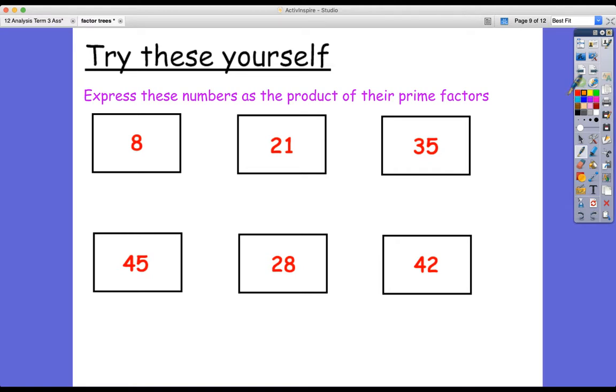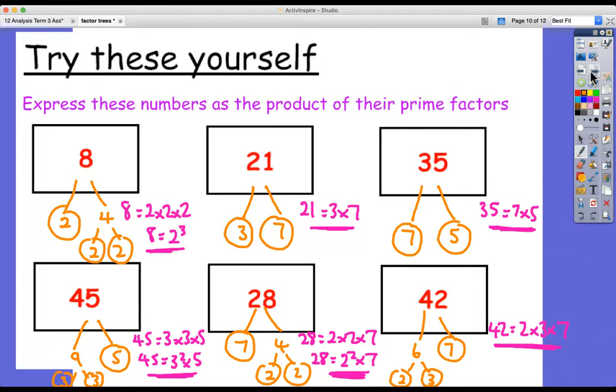So how did you get on? Did you get the answers? Let's go check. Here they are. So here's my factor trees and here's the product of their prime factors. Two times two times two, two cubed, three times seven, seven times five, three squared times five, two squared times seven. And these are all different. So it's just two times three times seven. I hope that you're nice and confident now with this topic, and good luck with your work.